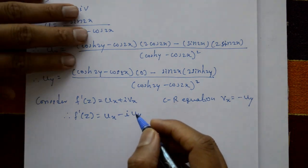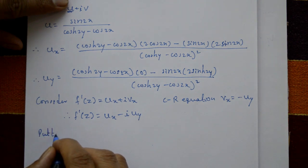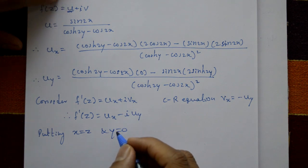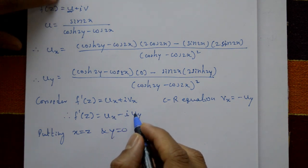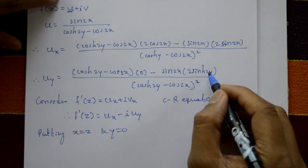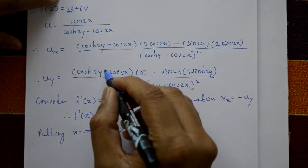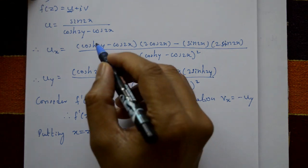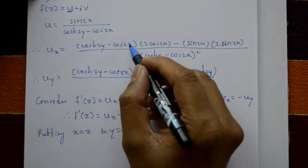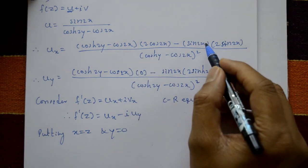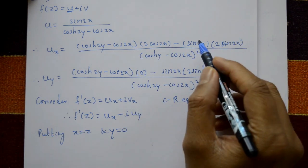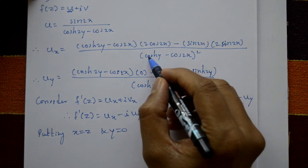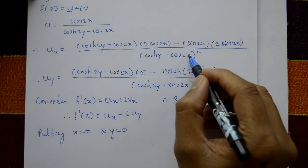Putting x = z and y = 0 in this equation: for u_y, substituting y = 0, sin(0) = 0, so the entire u_y part is 0. For u_x with y = 0: cos(0) = 1, then take x = z; sin(0) = 0, so that term is 0, and cos(0) = 1 and cos(0) = 1.